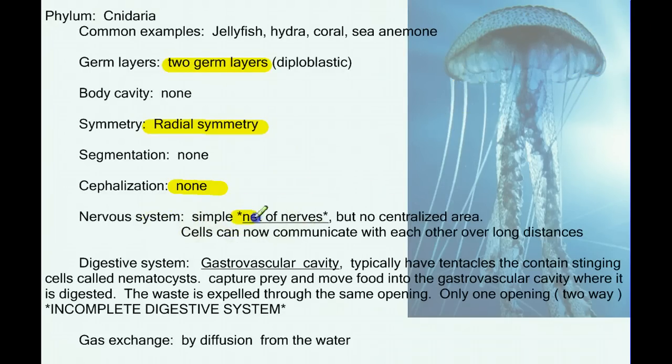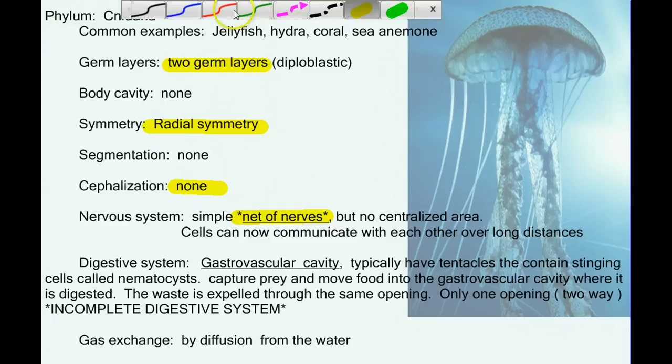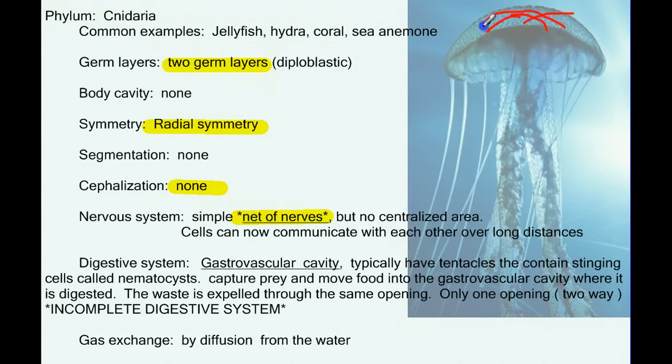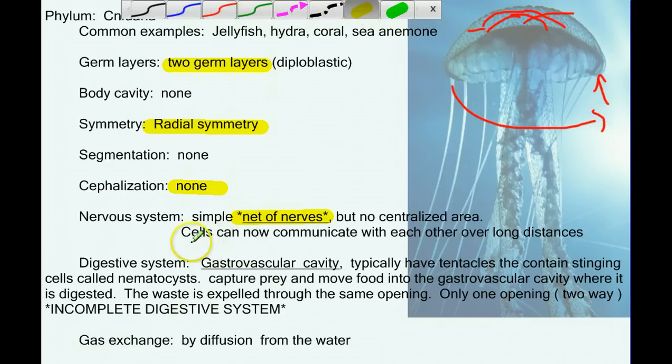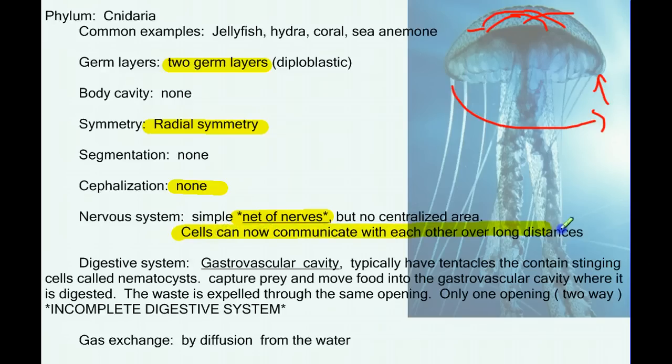But we do have our first nervous system, and this is an evolutionarily significant advancement. But there's no brain, there's no centralized system. It's just like a net of nerves. If you threw a net over the top of this, you have kind of a net of fibers. But what it means is that if you poke the jellyfish on this side, cells on this side or part of this body can know that you're there, and maybe it whips around these tentacles and stings you. This nervous system allows cells to communicate quickly over distances.